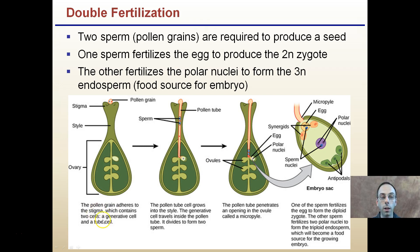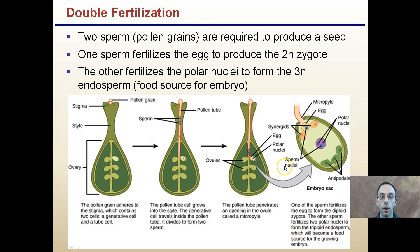The pollen grain adheres to the stigma, which contains two cells — the generative cell and tube cell. The pollen tube grows into the style. The generative cell transfers inside the pollen tube, dividing to form two sperm cells. The pollen tube penetrates the opening of the ovule called the micropyle. One of the sperm fertilizes the egg to form the diploid zygote. The other sperm fertilizes two polar nuclei to form the triploid endosperm, which becomes the food source for the growing embryo. This is an important process.